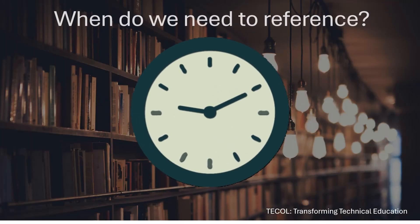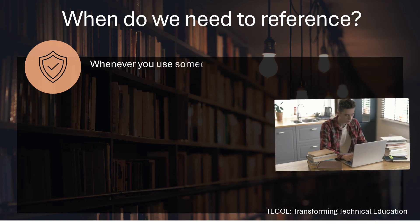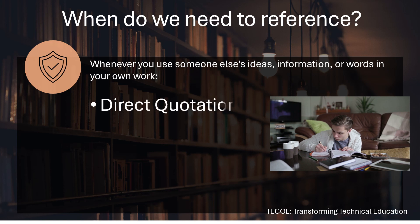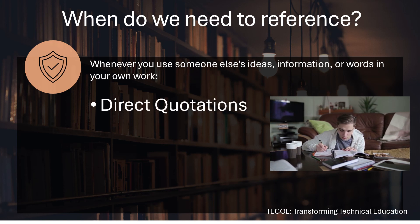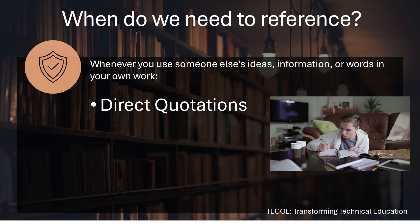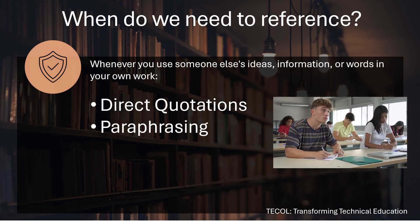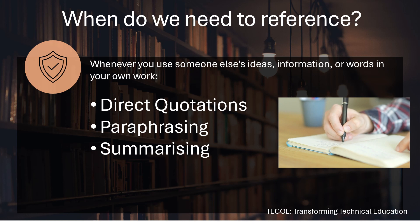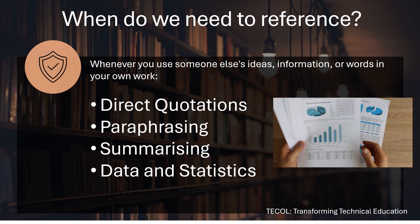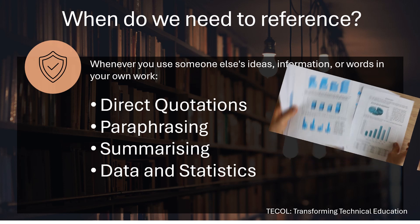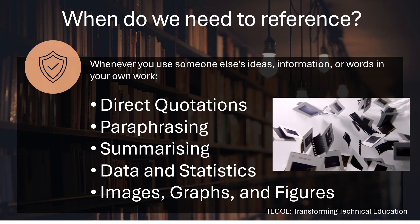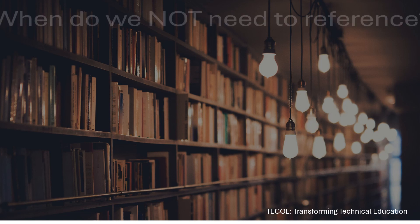When do we need to reference? You should reference a source whenever you use someone else's ideas, information, or words in your own work. This includes direct quotations — when you directly quote someone you must enclose the quote in quotation marks and provide a citation. It also includes paraphrasing, summarizing the main points from a source even without using exact words, any data or statistical information from another source, and any images, graphs, or figures created by somebody else.